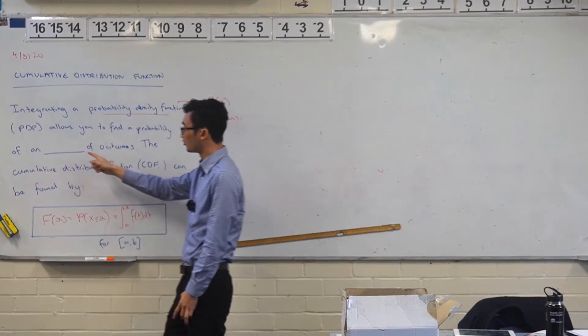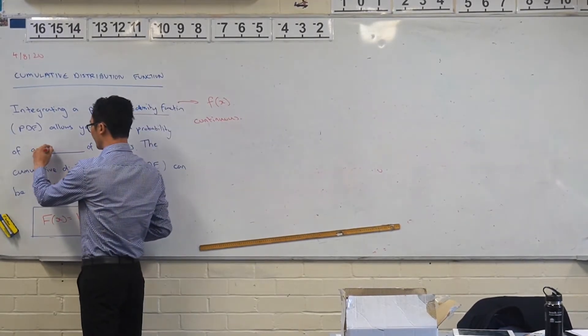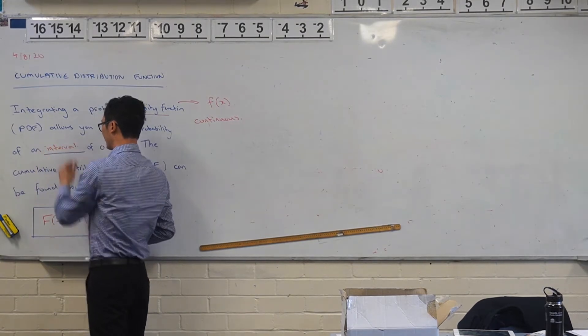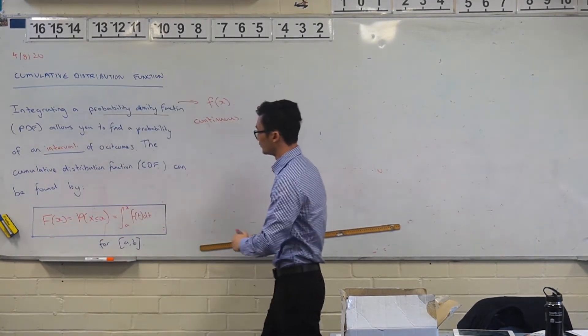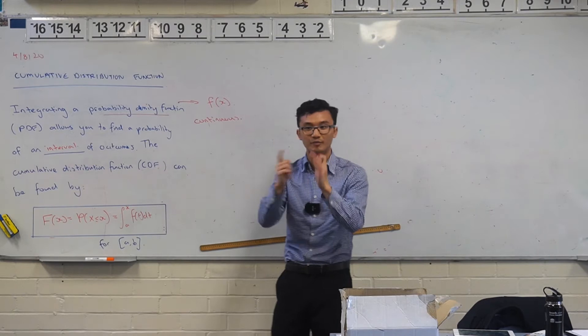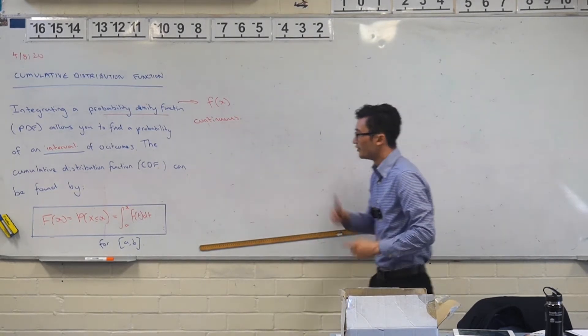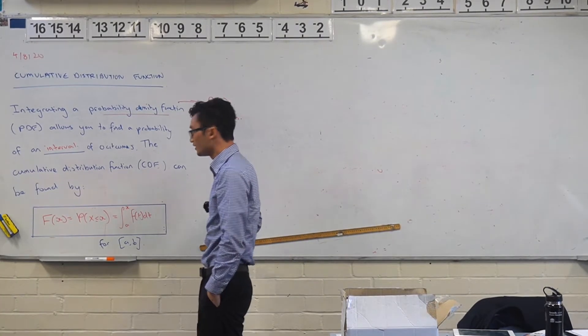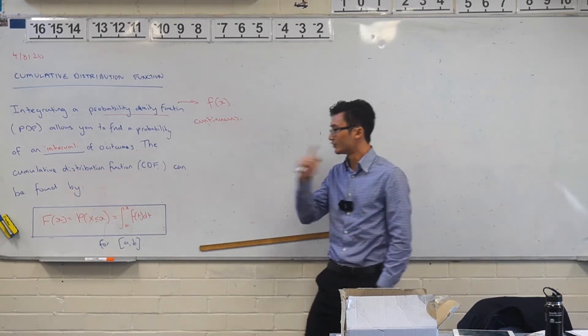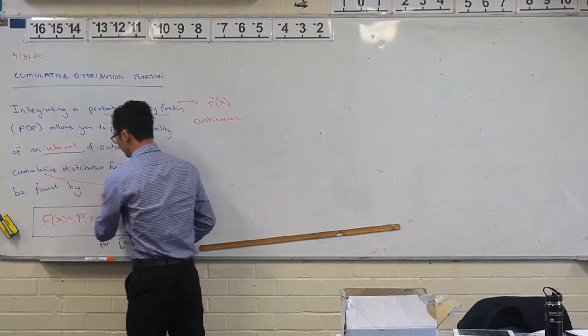So rather than find the probability of one outcome, you'll find the probability of an interval of an outcome. So you looked at that, maybe you want something between two numbers. Now the cumulative distribution function is also very useful. Now cumulative, you've seen this word before, does anyone remember what that means?